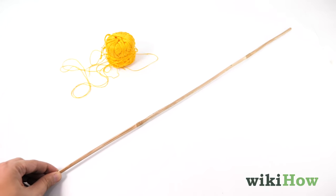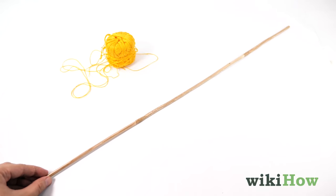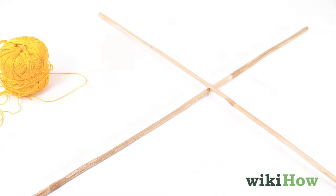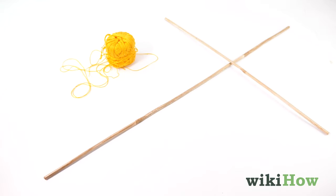Then lay the longer dowel down on a flat surface and place the shorter dowel on top of it, about 4 inches (12.5 centimeters) above the midpoint so they're perpendicular.